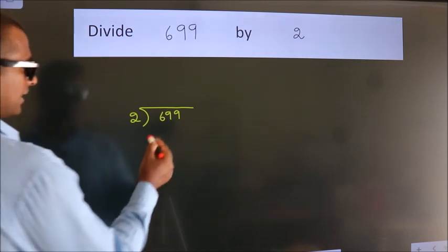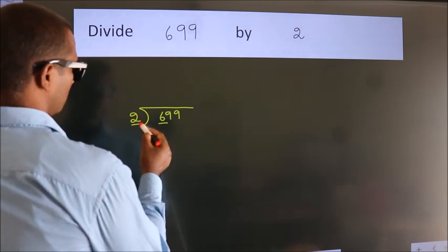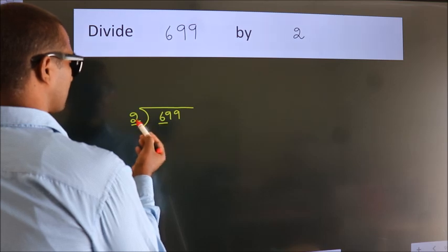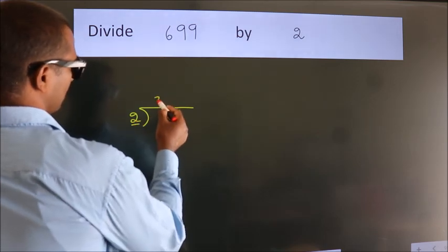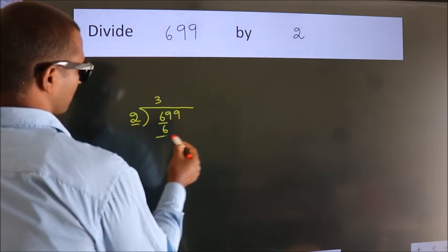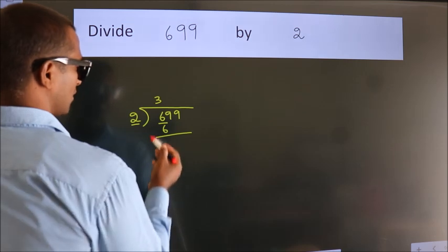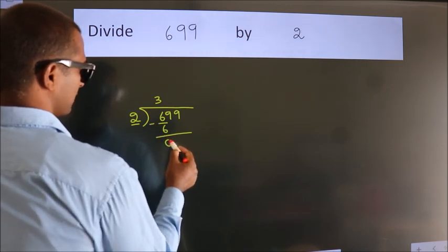Next. Here we have 6. Here 2. When do we get 6? In 2 table. 2 times 3 is 6. Now we should subtract. We get 0.